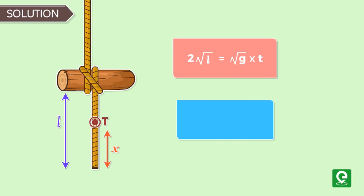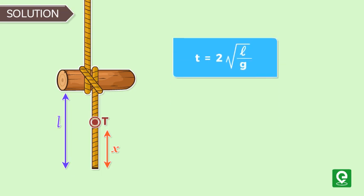On substituting the values of length of string 20 meters and gravity 10 meters per second squared, we get time t equal to 2 root 2 seconds.